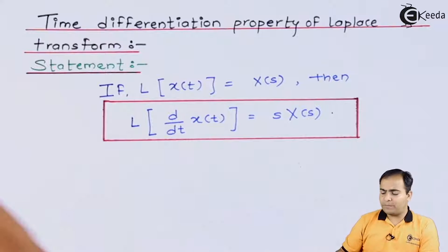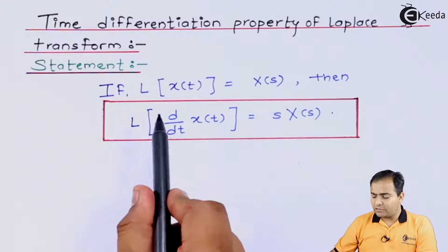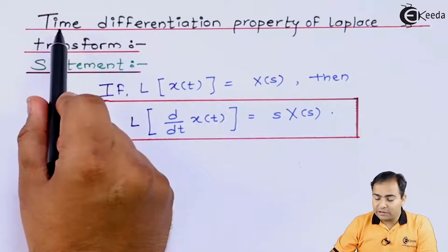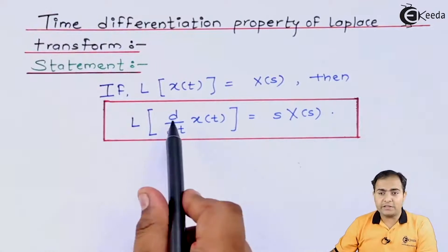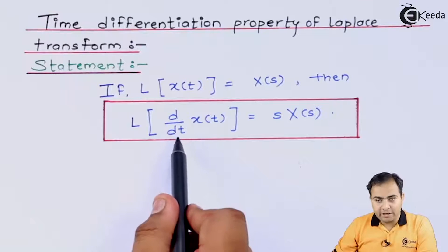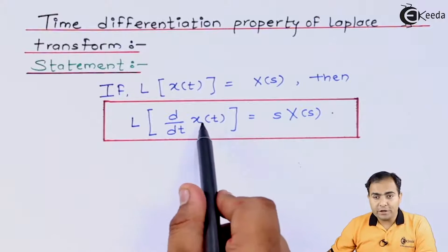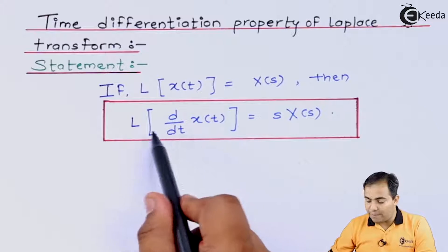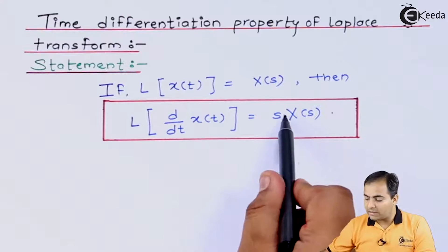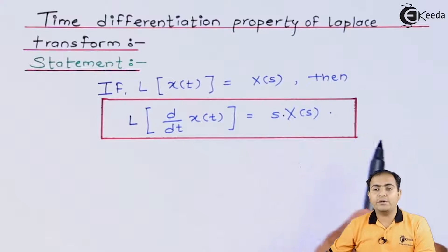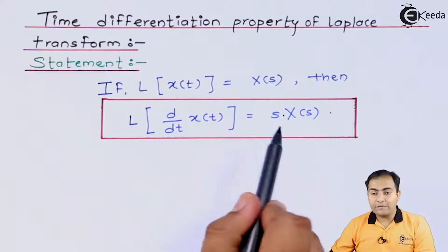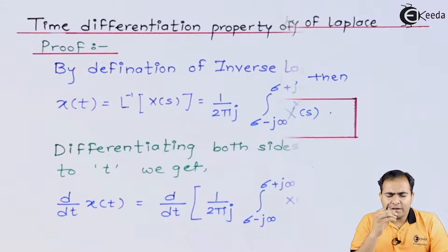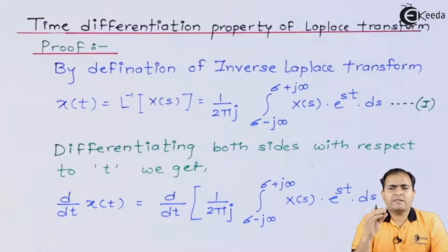The statement of the time differentiation property is: the Laplace transform of d/dt of x(t) — differentiating a time signal in the time domain — results in s·X(s). The resultant in the Laplace domain is X(s) multiplied by s. This is what we are going to prove.